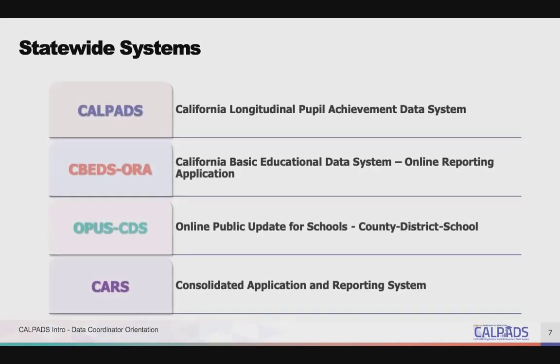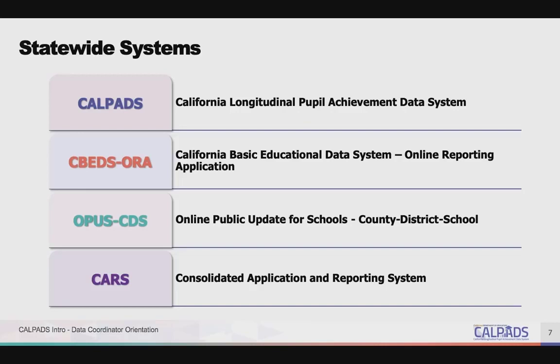The statewide systems are CALPADS, the California Longitudinal Pupil Achievement Data System; CBEDS-ORA, the California Basic Educational Data System Online Reporting Application; OPUS CDS, the Online Public Update for Schools County District Schools; and CARS, the Consolidated Application and Reporting System.